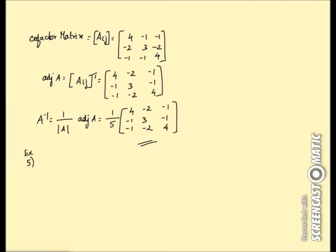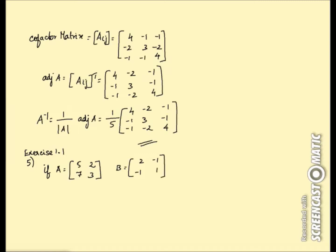Exercise 1.1, fifth problem. If A is equal to [[5,2],[7,3]] and B is equal to [[2,-1],[-1,1]], verify that (AB)⁻¹ is equal to B⁻¹A⁻¹. We already know the formula, so let's prove it.